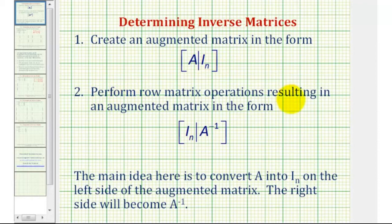Then we perform operations resulting in an augmented matrix where the left side is the identity matrix and the right side becomes the inverse matrix. So the main idea is to convert the given matrix, matrix A, into an identity matrix using row operations and then on the right side we end up with the inverse of the original matrix.